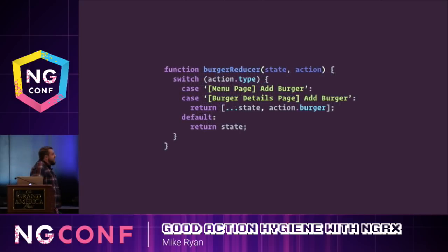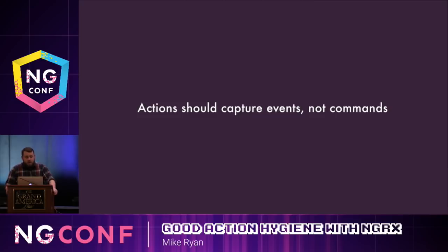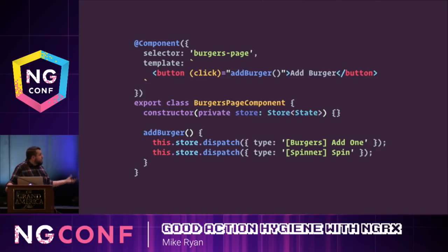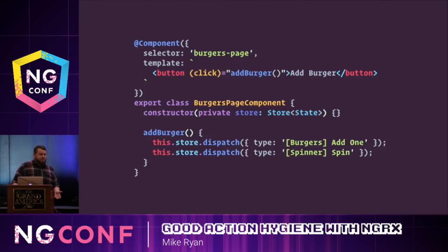Here I've replaced that generic action type with two specific actions that give us clarity. Actions should try to capture events, not commands. Instead of reusing actions or capturing commands, try to model your actions as unique events in your system. This will also help you avoid the need to dispatch multiple actions in a single call site — it's one of the most common questions Brandon and I get. The answer is you should probably never need to dispatch multiple actions from the same effect, because you're capturing unique events with their own actions.